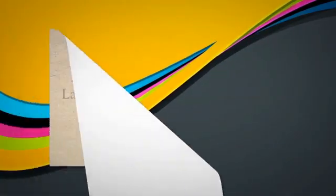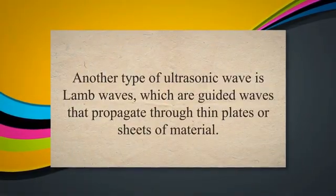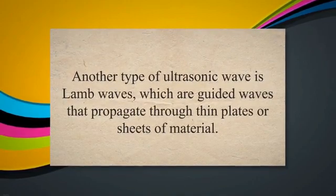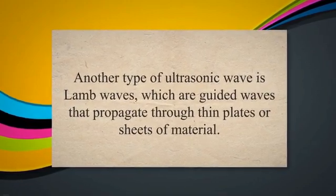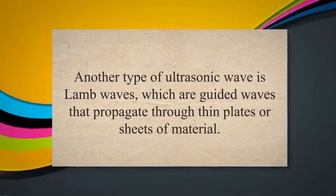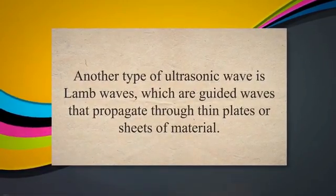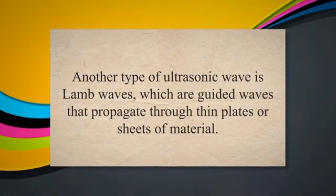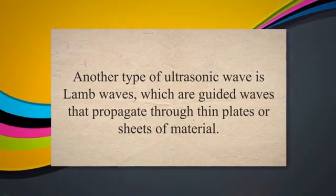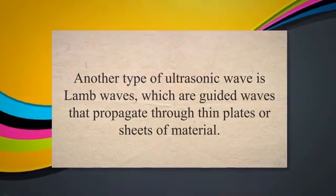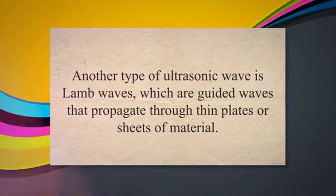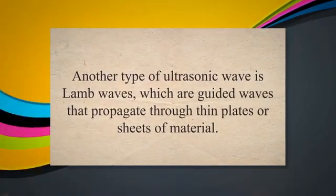In addition to these two main types, there are also surface waves, which travel along the surface of a material and are used to detect flaws near the surface. Another type of ultrasonic wave is Lamb waves, which are guided waves that propagate through thin plates or sheets of material.